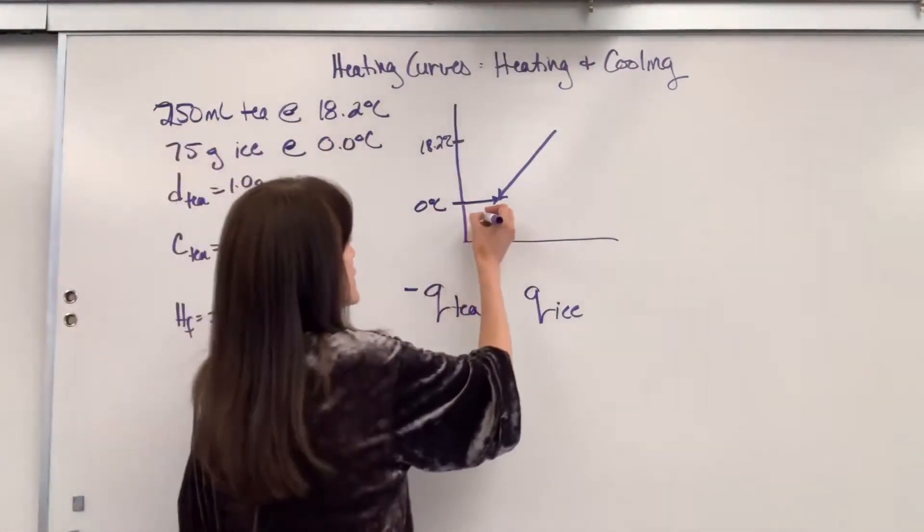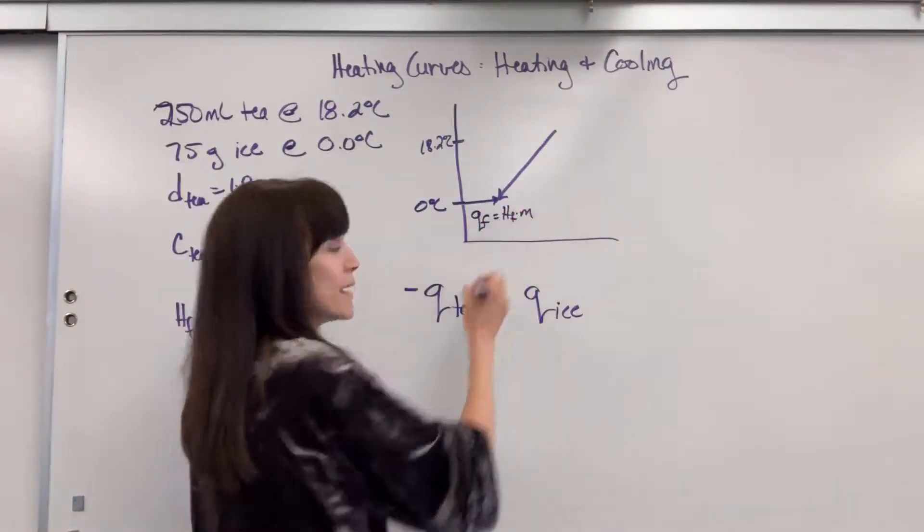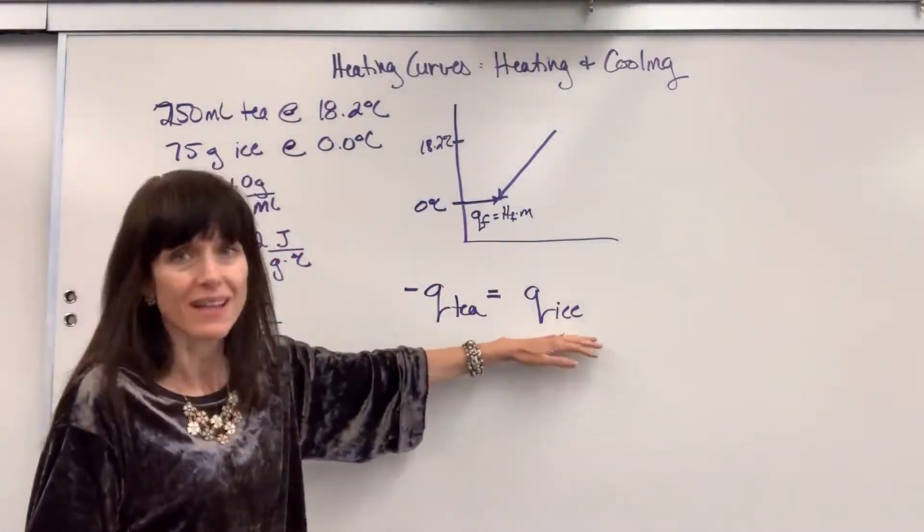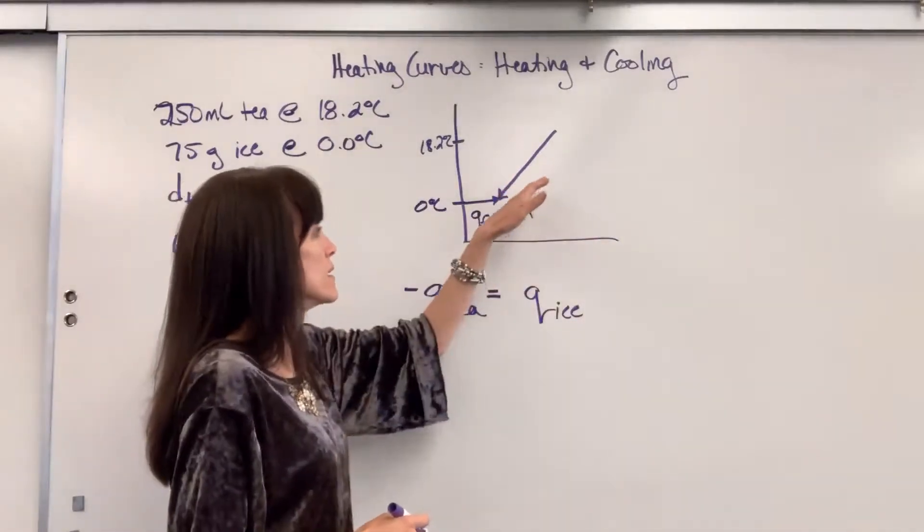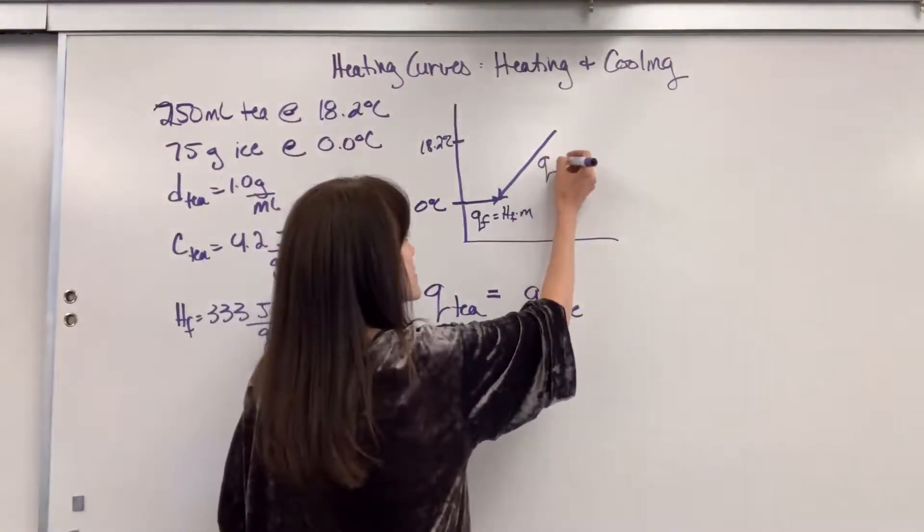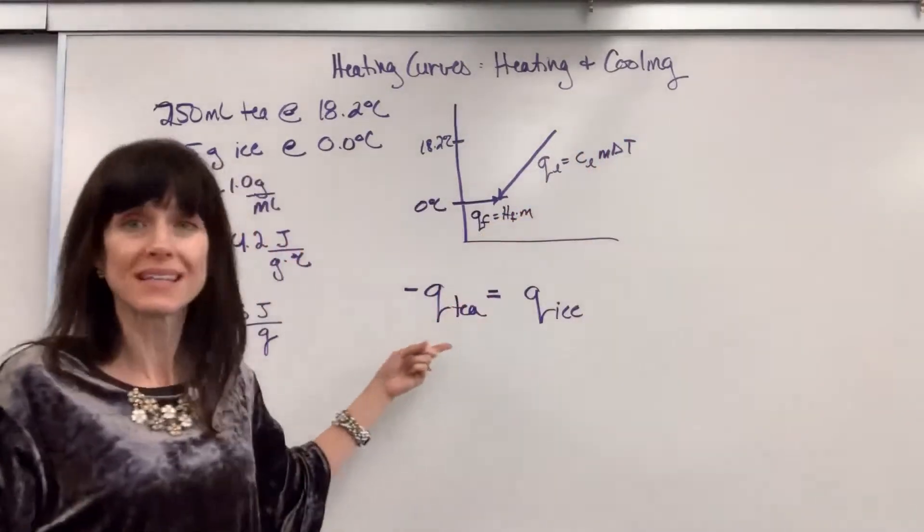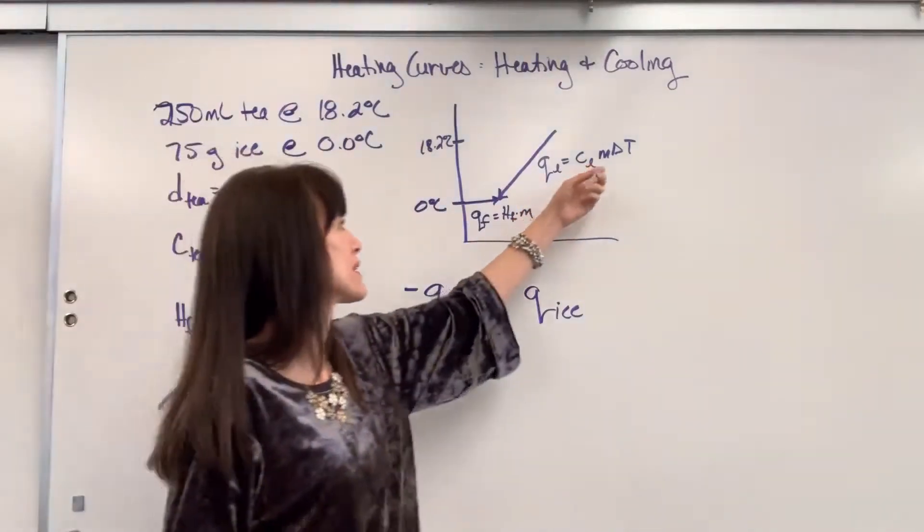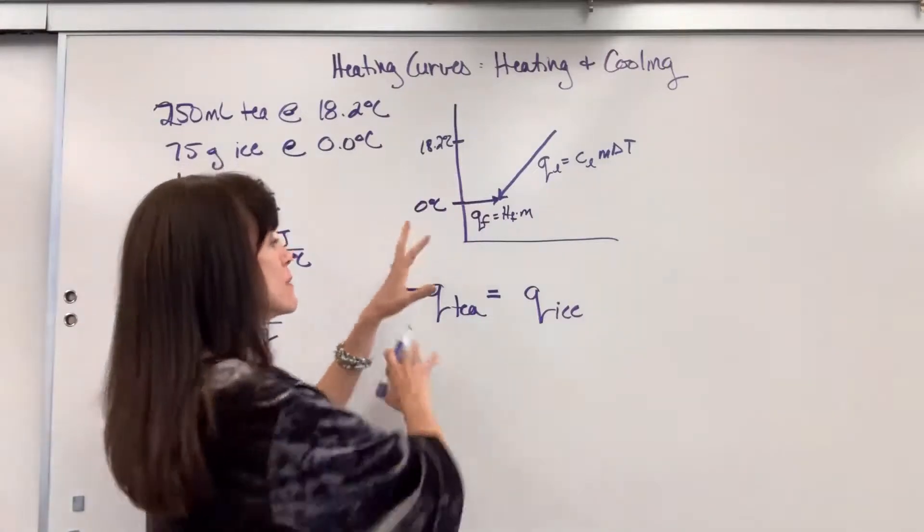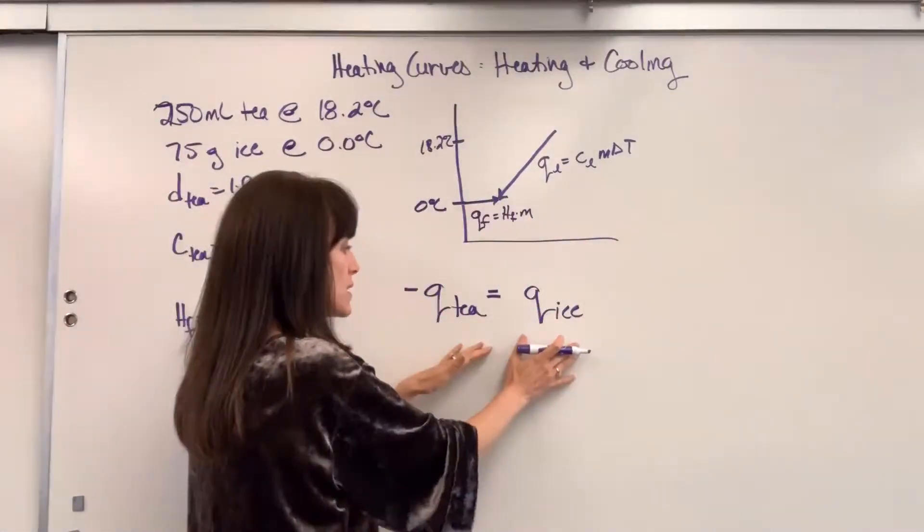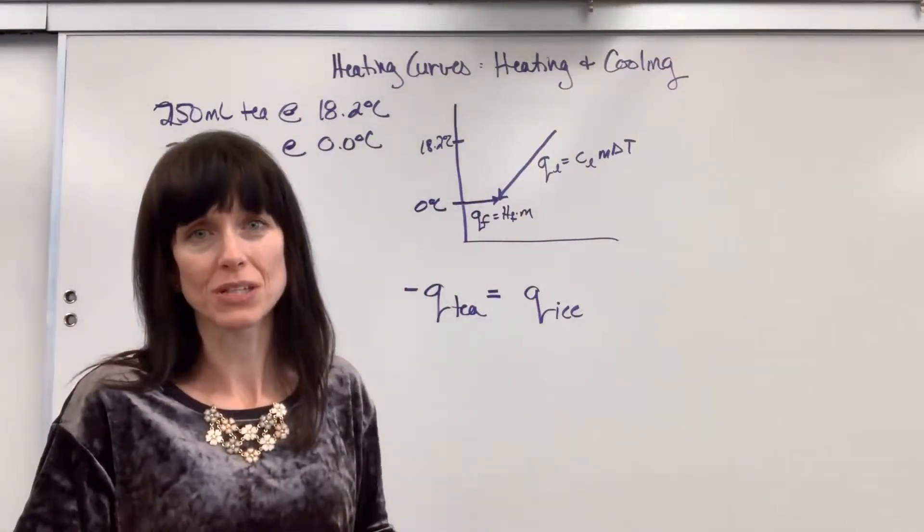So I draw the curve, and here's the reason why I draw it. I draw it so that I can label what formulas I have to use. When I'm melting, the Q to melt, remember Q fusion, is heat of fusion times mass. Well, that's my ice right here. I'm going to plug this in right there. Here, cooling down the liquid, Q of a liquid, specific heat of liquid, M delta T. Well, the liquid is the T. So I'm going to plug that formula in right here. Seeing it graphically helps me make sense of all this.